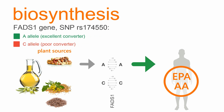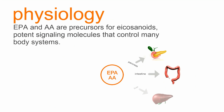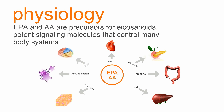In contrast, a person with C alleles is a poor converter and needs to eat more animal fats to get sufficient EPA and AA. EPA and AA and their metabolites, eicosanoids, exert complex control over many systems and processes in the body, including nutritional homeostasis, cardiovascular function, inflammation, the central nervous system, bone formation, and reproduction.